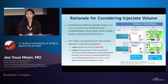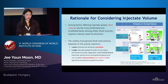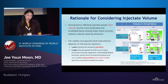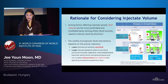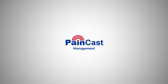Similar to other screening procedures, the validity of prognostic facet interventions depends on precise injection, because lower volumes may enhance specificity. However, larger volumes may spread to other surrounding structures and can increase false positives, undermining specificity and positive predictive value.